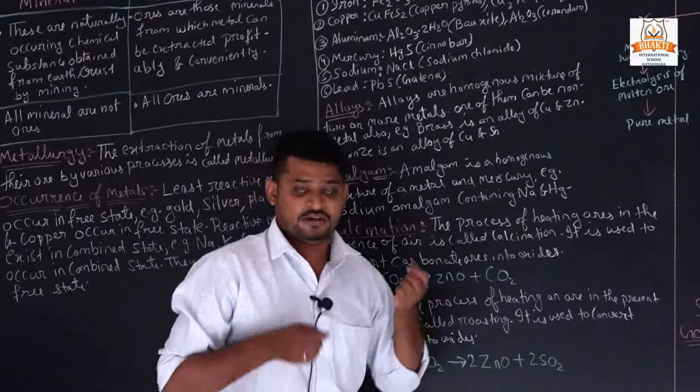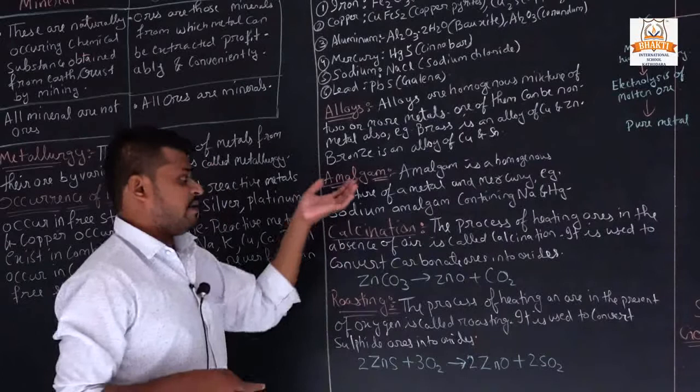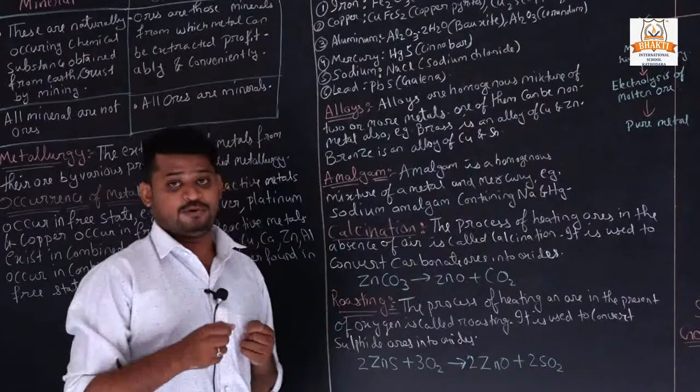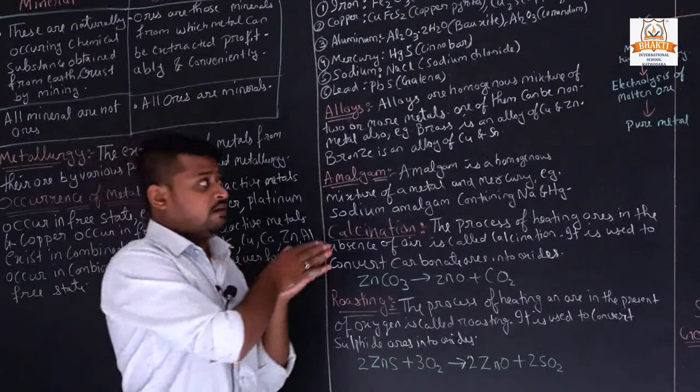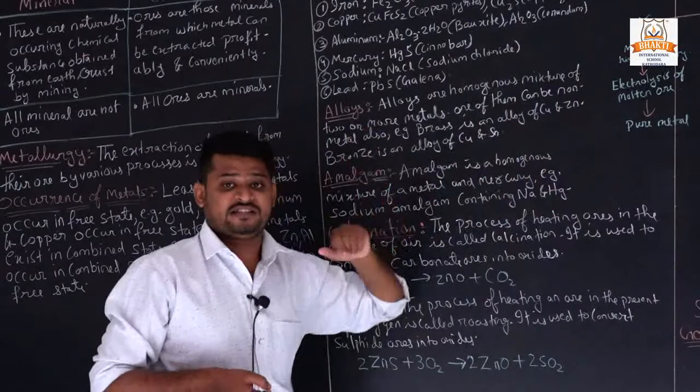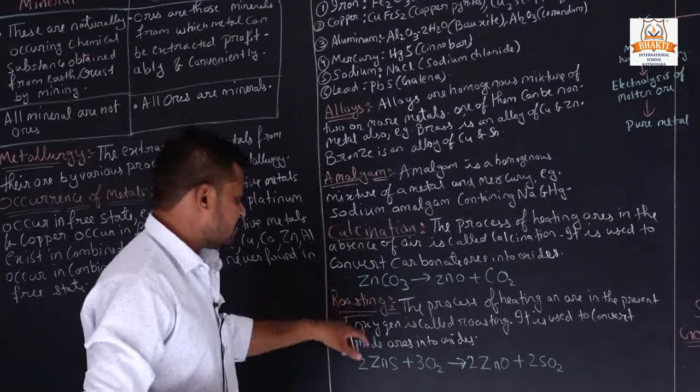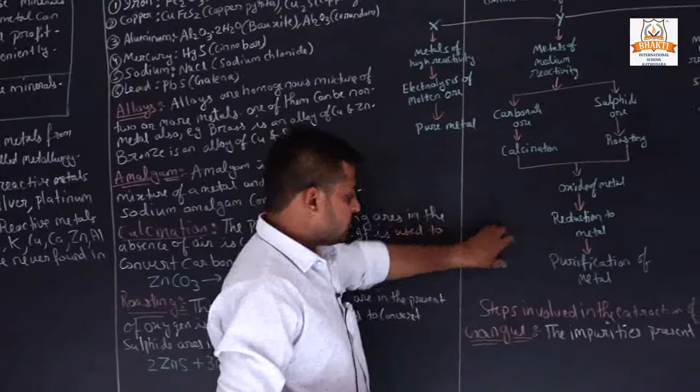Now we will look at calcination and roasting — these are two processes used in the extraction of ore. First we will see the whole chart of steps involved in the extraction of metals from ores, and then we will study what calcination and roasting are.